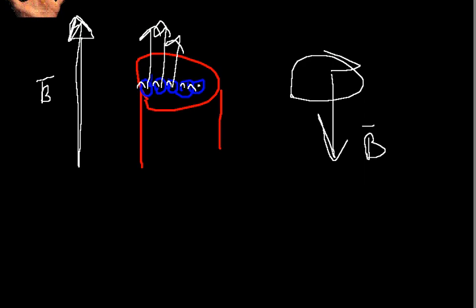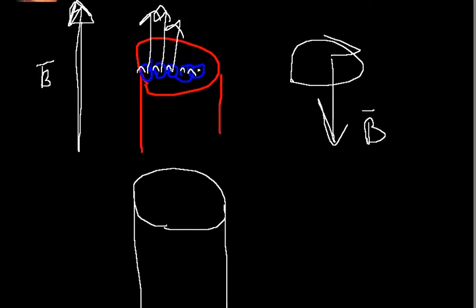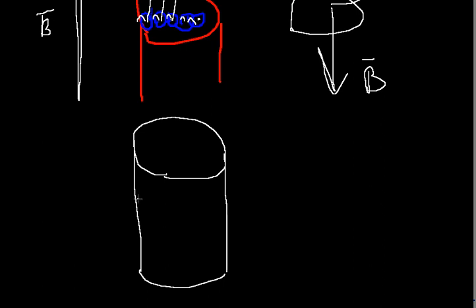Why is this question interesting? The main point is that in this case we can identify only a single molecular current on the surface of this magnetic material. This surface current arises because of the compensation of molecular currents within the volume of the magnet.